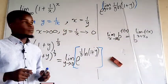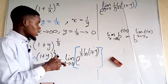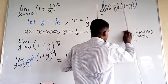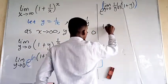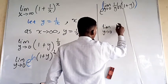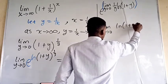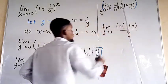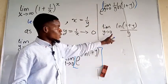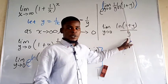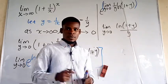We are now going to evaluate the limit of the exponent first, then put it back inside. So we want the limit as y tends to 0 of ln(1 + y) over y. As y tends to 0, we get ln(1) over 0, which is 0 over 0 — that is an indeterminate form. So at this point, we are free to use L'Hôpital's rule.